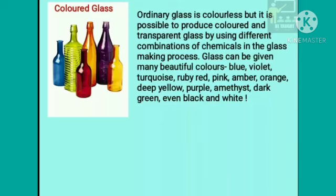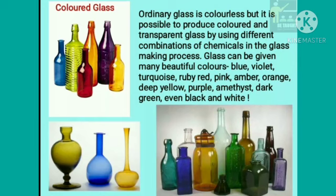Color glass. Ordinary glass is colorless, but it is possible to produce colored and transparent glass by using different combinations of chemicals in the glass-making process. Glass can be given many beautiful colors such as blue, violet, turquoise, ruby red, pink, amber, orange, deep yellow, purple, amethyst, dark green, and even black and white.